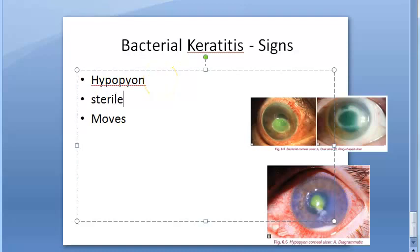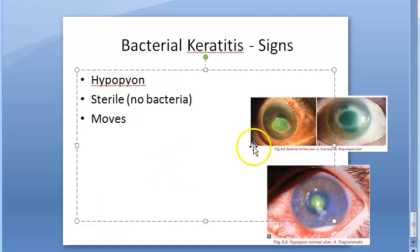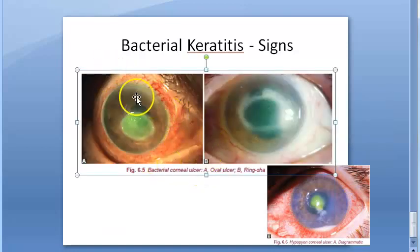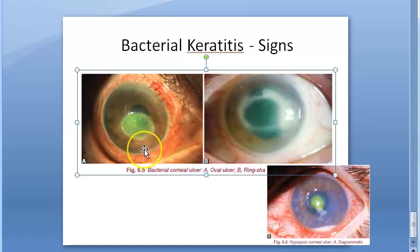On examination you can see swelling of eyelids, blepharospasm, chemosis of conjunctiva, hyperemia, and ciliary congestion. The corneal ulcer will appear as an oval, yellowish-white area. Margins of the ulcer will be swollen or overhanging, the floor is covered by necrotic material, and there is stromal edema surrounding the ulcer area.